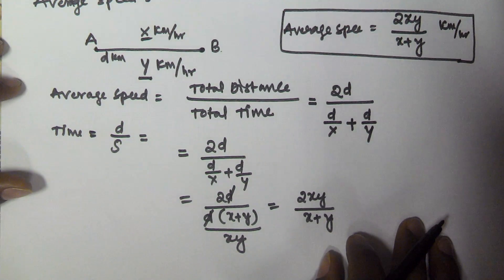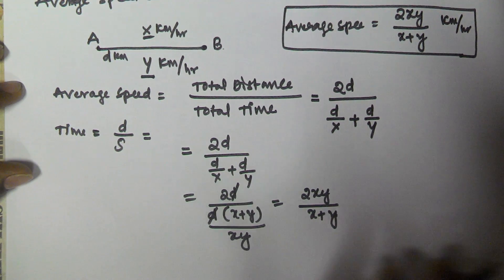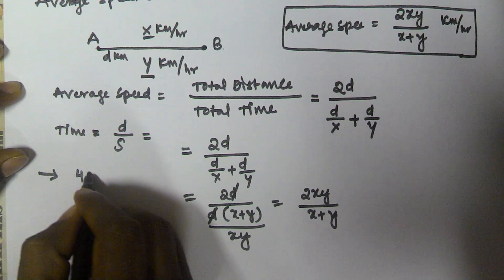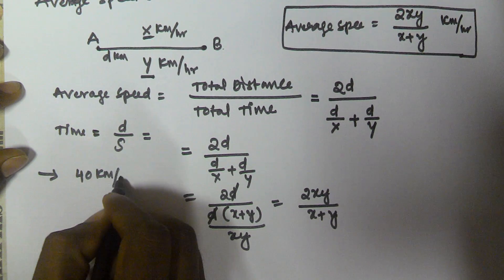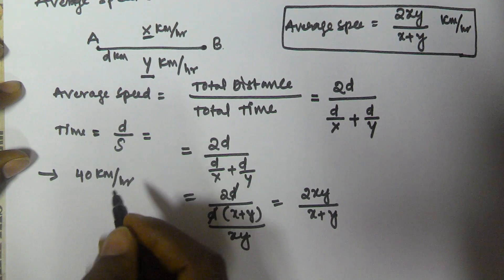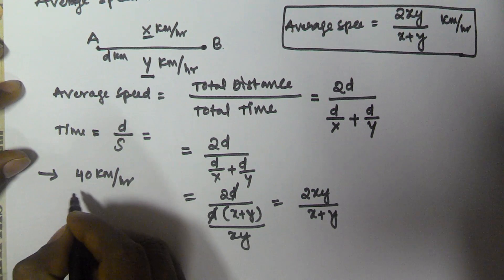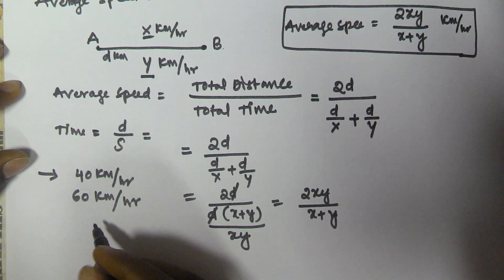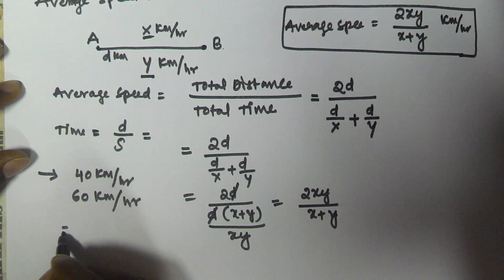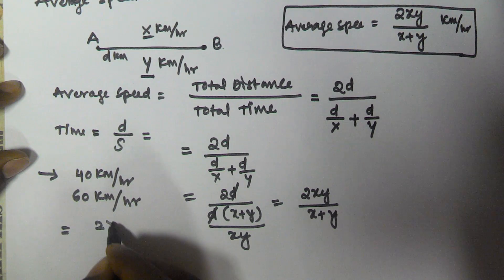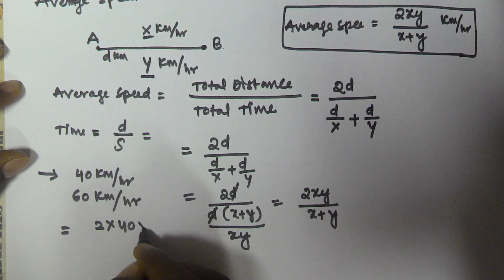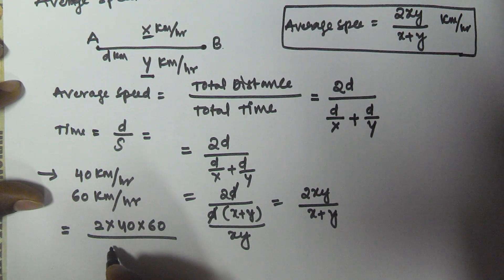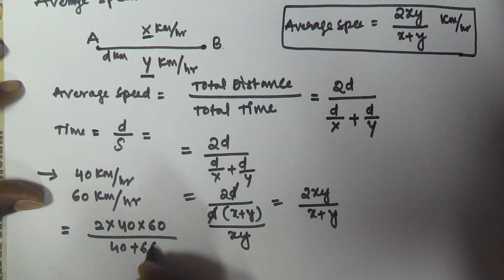So let us solve one example based on this concept. For example, a person travelled from his home to office at 40 km per hour and again he returned from office to home at 60 km per hour. So what is his average speed? His average speed is going to be 2xy, that is 2 into 40 into 60 by x plus y, so 40 plus 60.